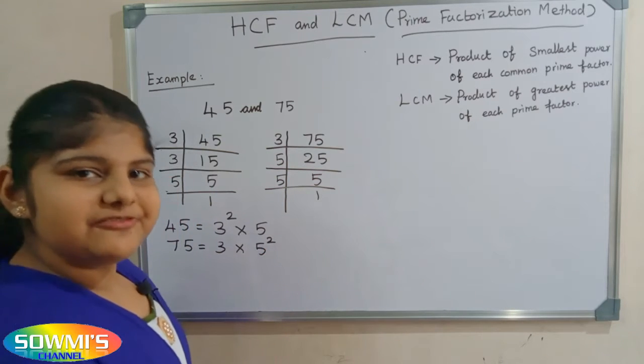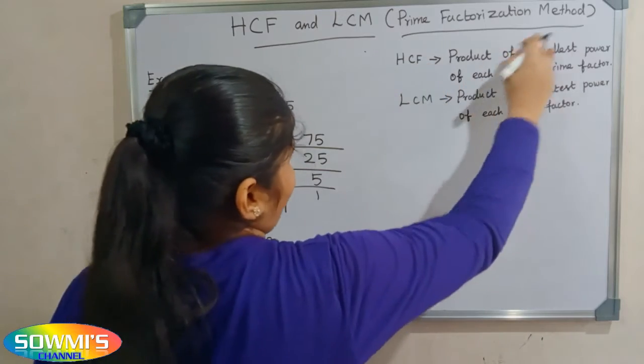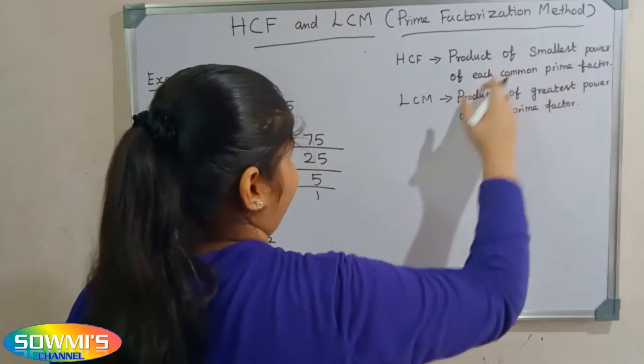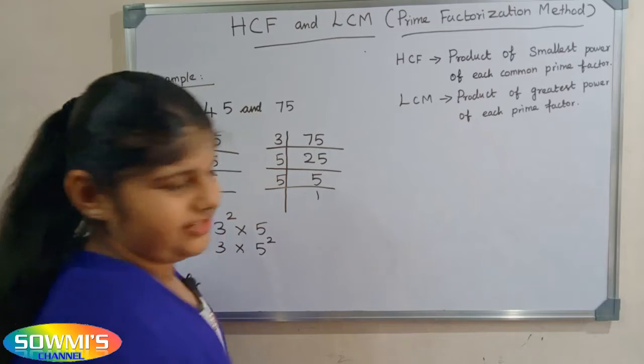First we will find HCF. HCF is the product of the smallest power of each common prime factor.